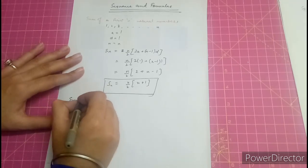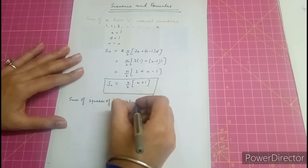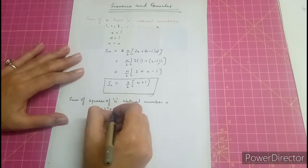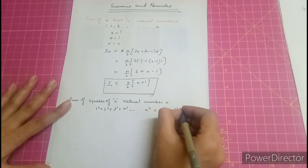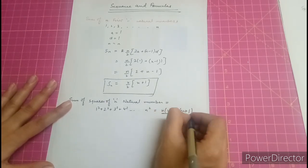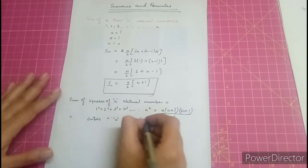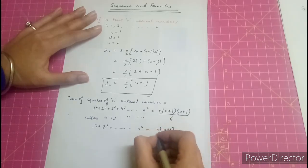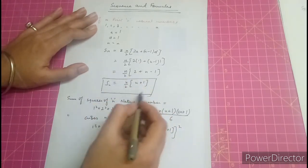Sum of squares of n natural numbers: 1 squared plus 2 squared plus 3 squared up to n squared. The formula is n(n+1)(2n+1) divided by 6. Sum of cubes of n natural numbers: 1 cubed plus 2 cubed up to n cubed. The formula is [n(n+1)/2] whole squared.